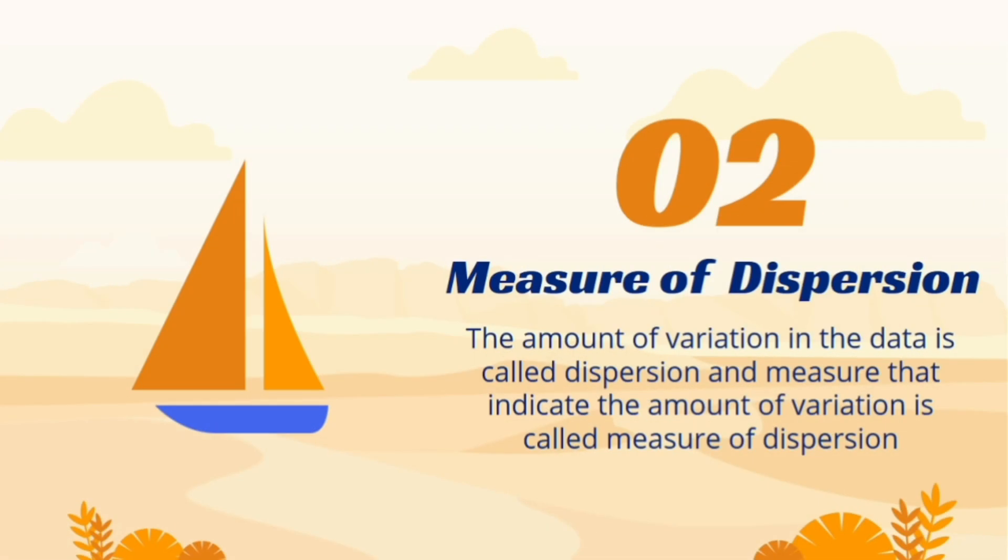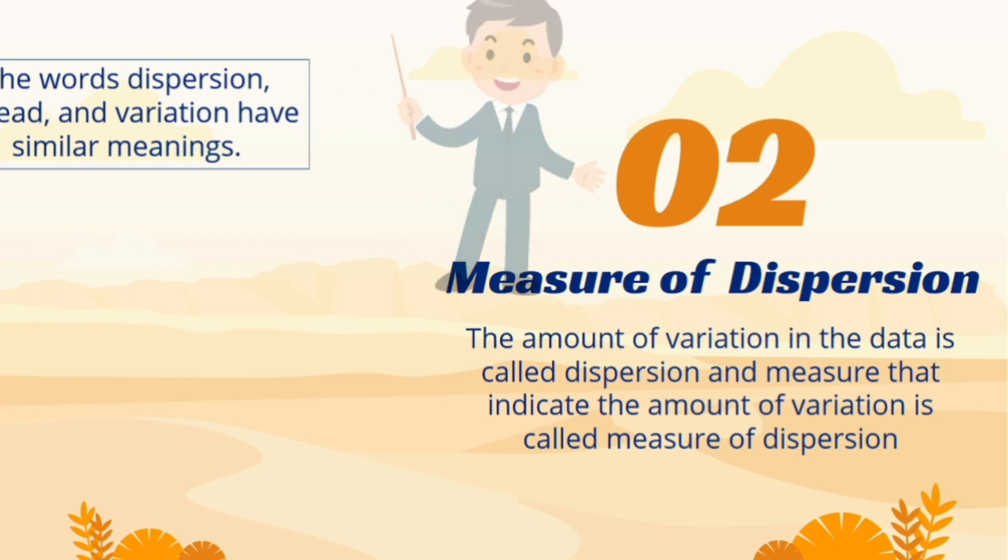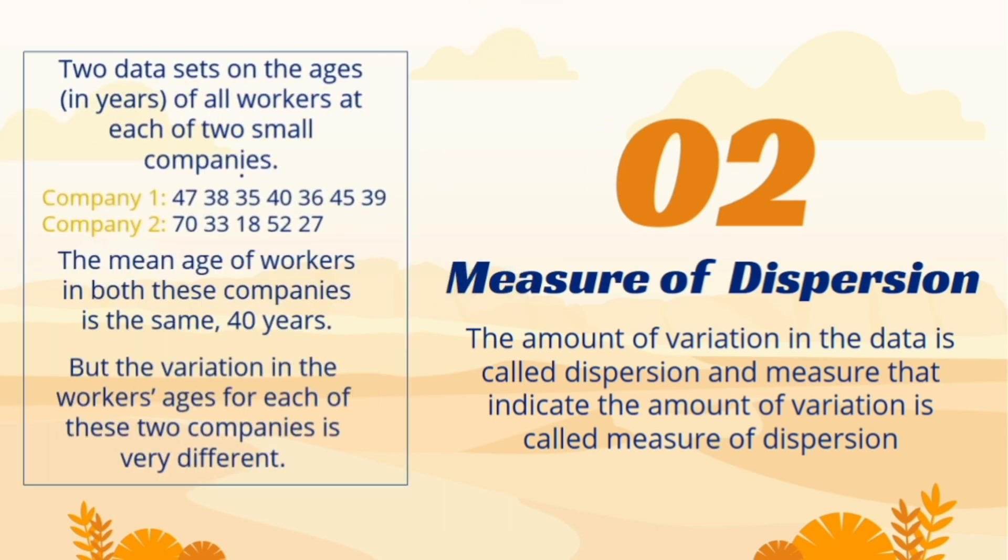Secondly, we focus on measure of dispersion. Measure of location does not reveal the whole picture of a dataset, as it tells us only the concentration of the data, but does not describe anything about the variation of observations in dataset. Two datasets with the same average may have completely different variations. So along with measure of location, we also prefer measure of dispersion for adequate description of the dataset.